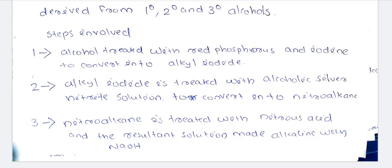The alkyl iodide is then treated with alcoholic silver nitrate (AgNO₃). This forms nitroalkane. The nitroalkane is then treated with nitrous acid in a basic solution.